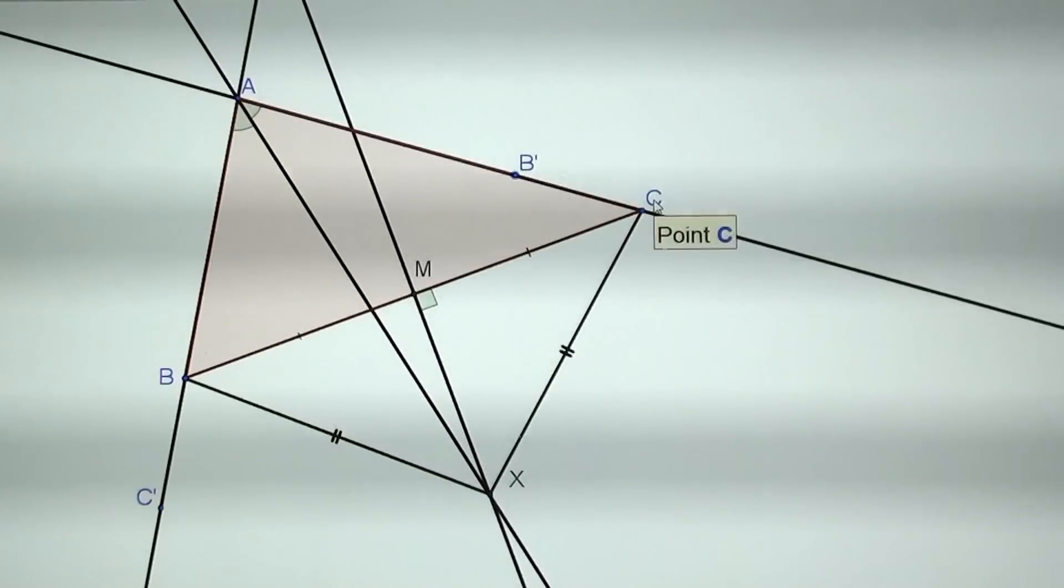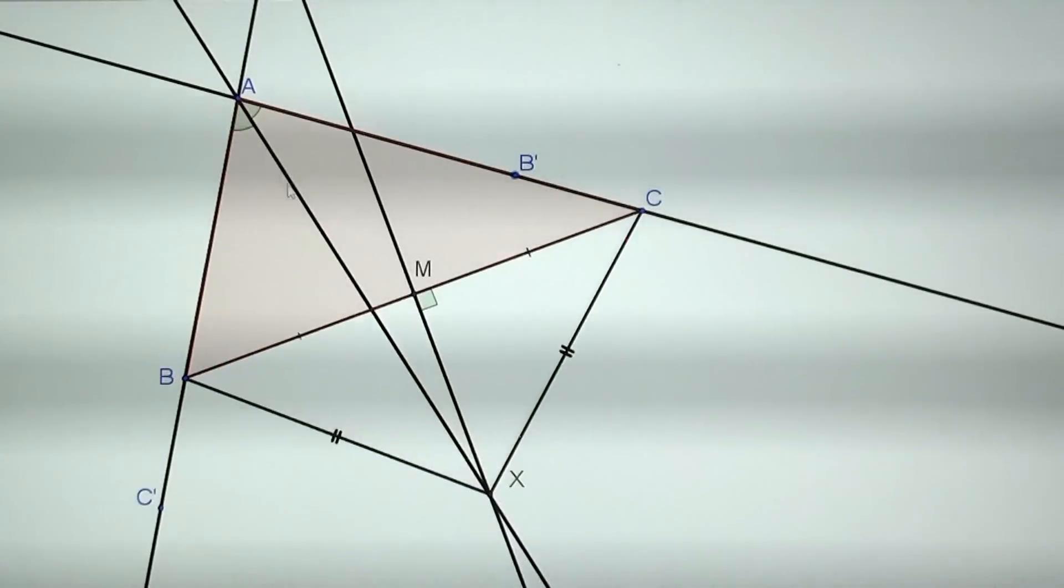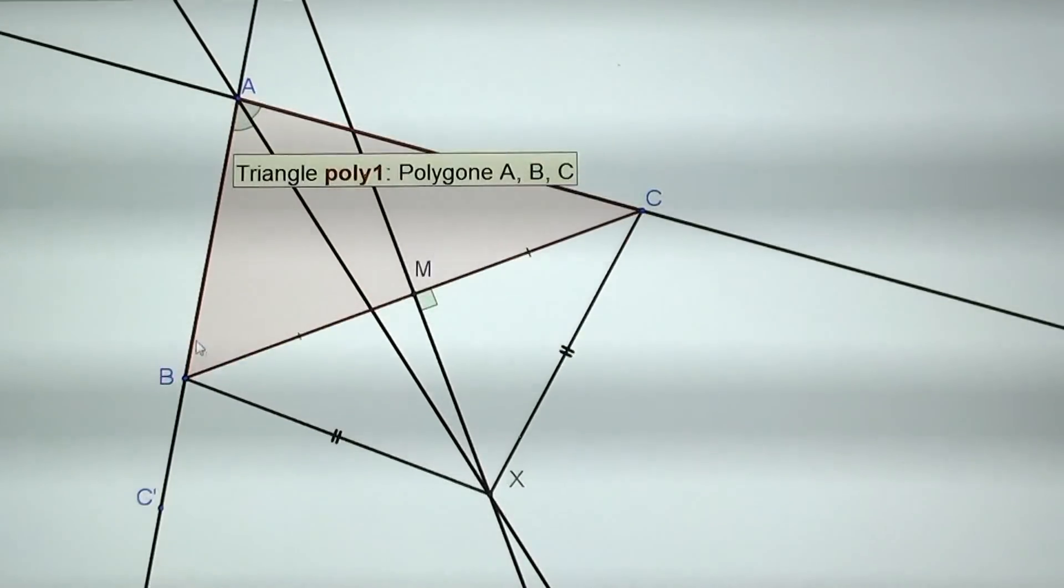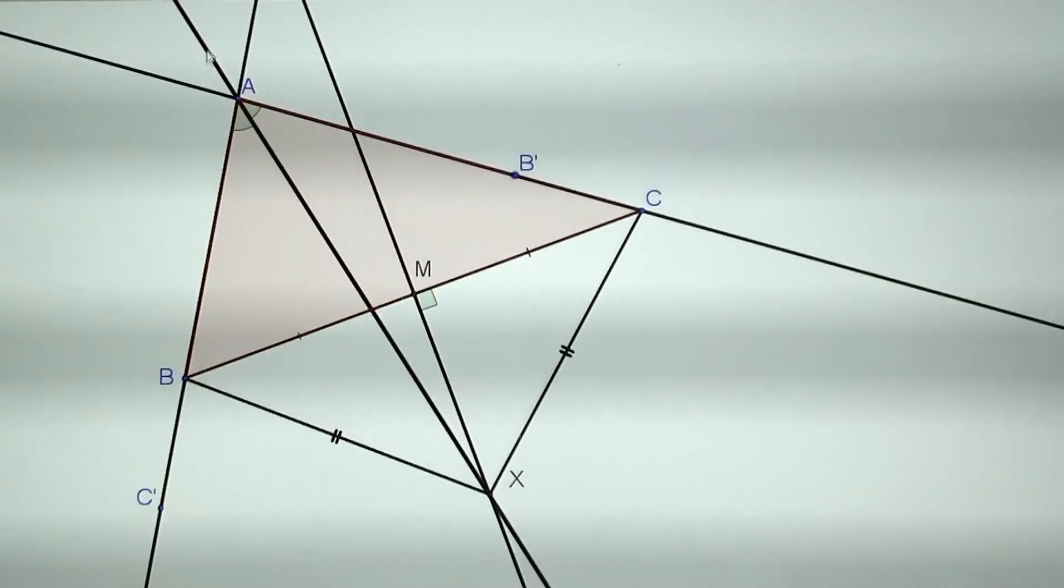One important fact is that because this triangle is a scalene triangle we can assume that AB is shorter than AC. If it's the opposite, well you just rename the points and we get to the same situation. Since AX is the angle bisector, B prime and C prime are actually on the side of this angle - this is one of the properties of the angle bisector. So B prime and C prime are on those two lines AC and AB.